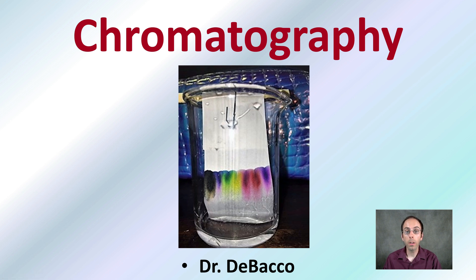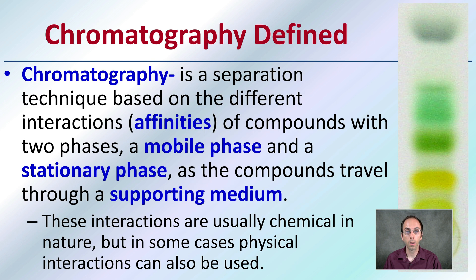Here we're going to be looking at chromatography. This is an example shown here of paper chromatography, but a lot of the same basic components will apply to different types and forms of chromatography. First off, here is a definition of chromatography: it's a separation technique based on different interactions or affinities of compounds with two phases.